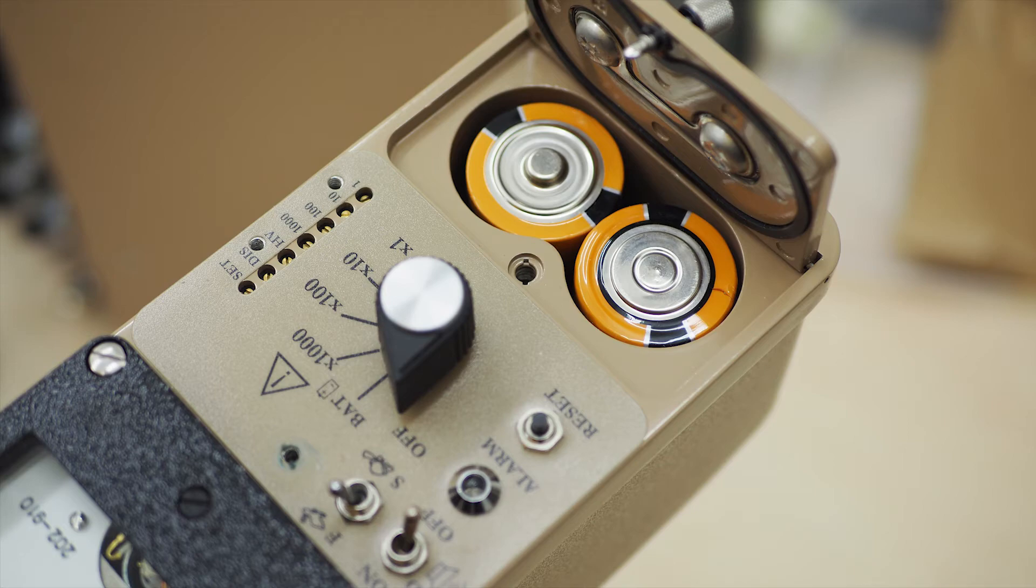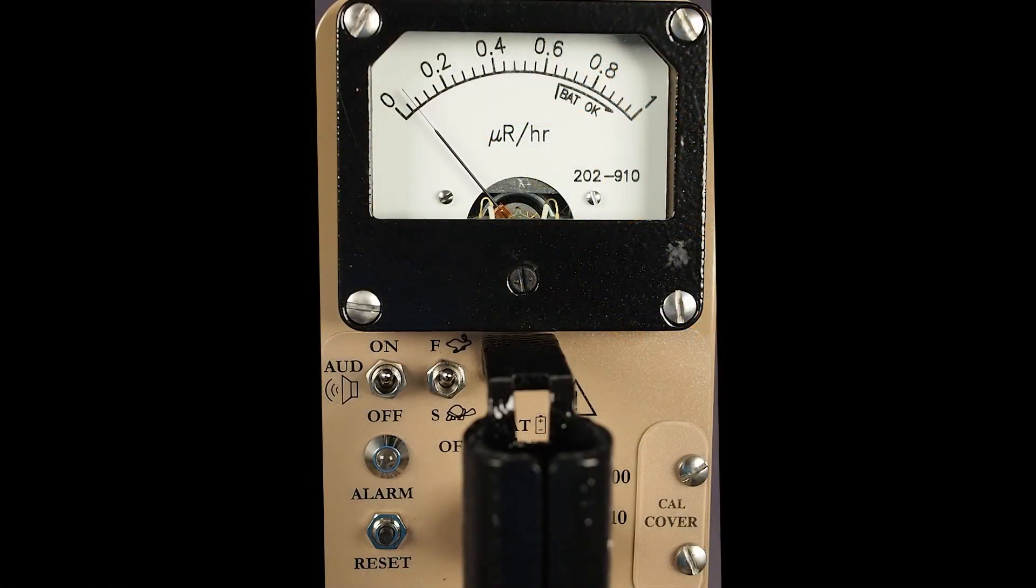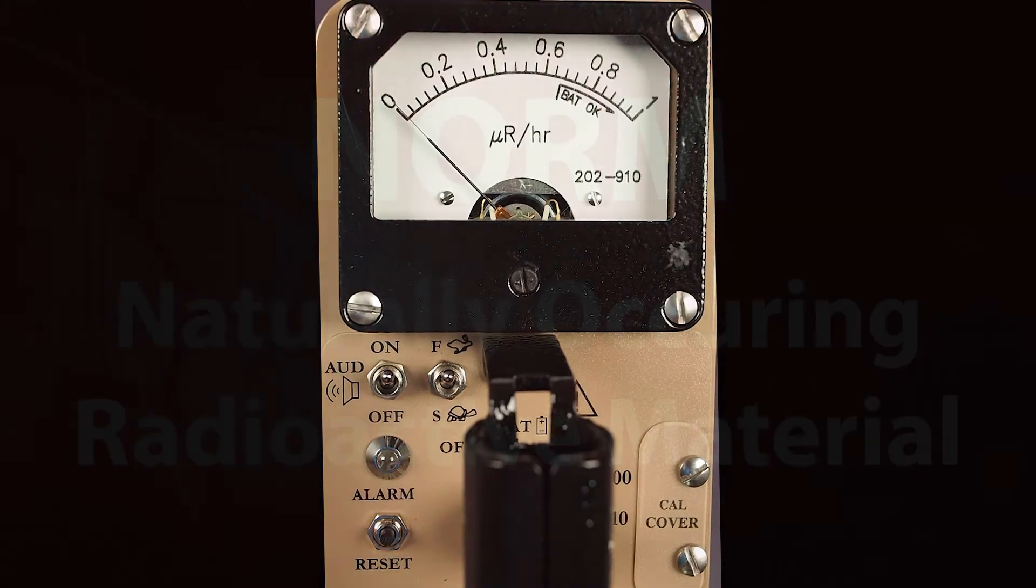The meter can sense a detector failure if it receives no counts from the detector for 8 seconds. In the event this occurs, the instrument will beep rapidly and displays a meter reading of zero. The instrument should be taken out of service until it is repaired.